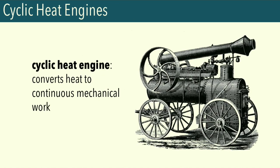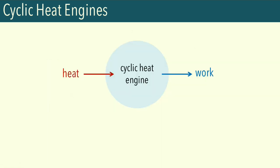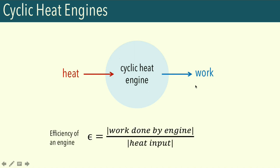The heat engine was developed during the Industrial Revolution. Basically, it converts heat to continuous mechanical work. Typically, people burn coal in order to boil water and use the steam produced to drive pistons, which then provided the useful mechanical work. We'll look at how this works exactly later on. Overall, people just wanted to maximize the efficiency of heat engines — as in, they want to convert as much heat into continuous mechanical work as possible. So let's look at the basic schematic of a heat engine. We have our cyclic heat engine, and we have heat flow from the surroundings, which then increases the internal energy of the engine. The engine then converts that internal energy into work. So if you want to calculate efficiency, it's just going to be the magnitude of work done by the engine divided by the heat input.